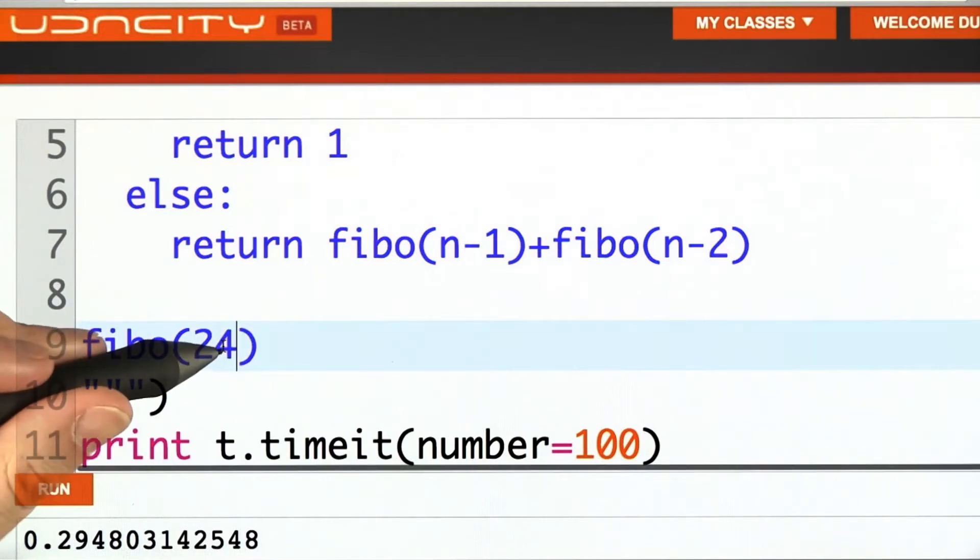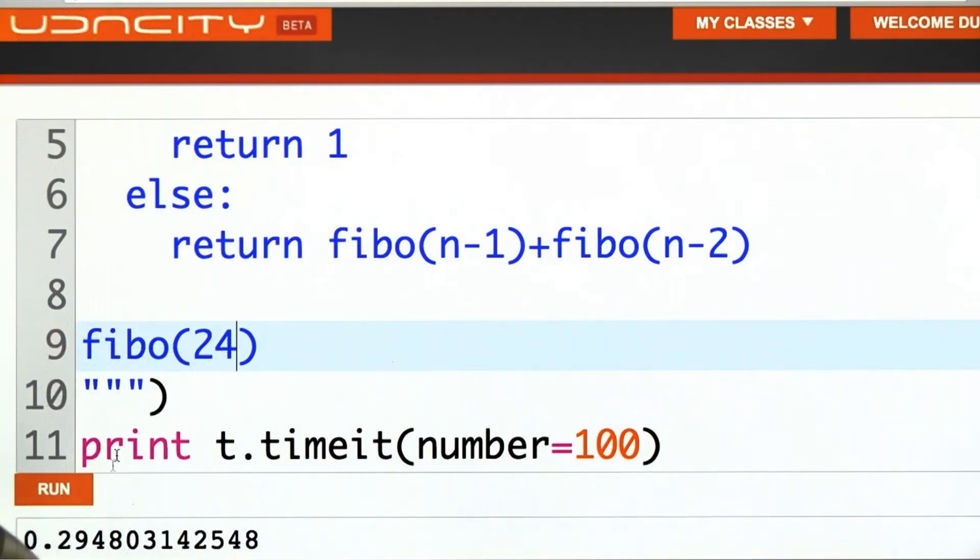Let's up that a bit to the 24th Fibonacci number. Should take not that much longer, right? Oh, significantly longer, from 0.3 seconds to 1.75 seconds. We went up a huge amount.